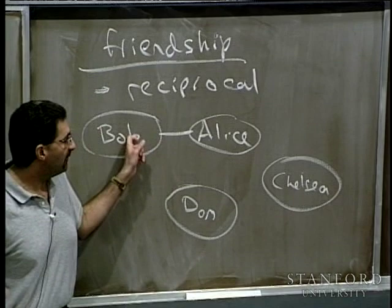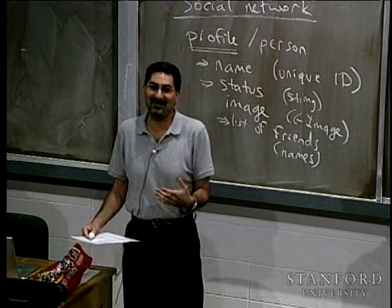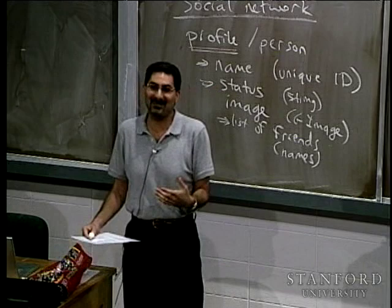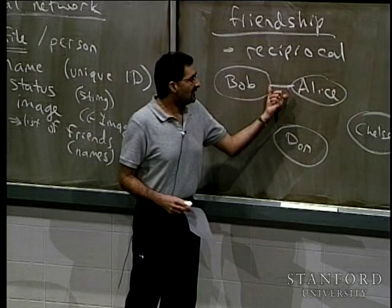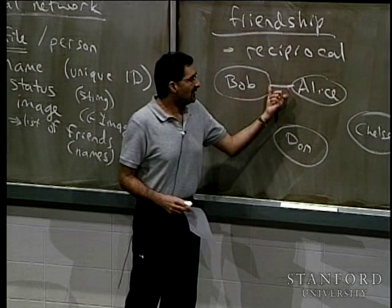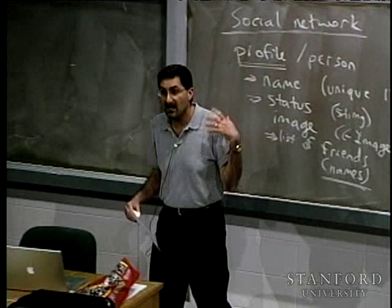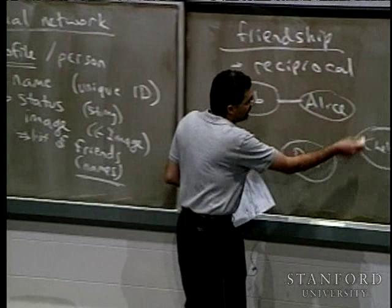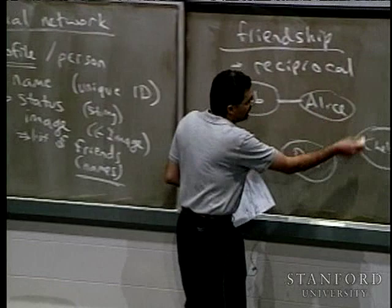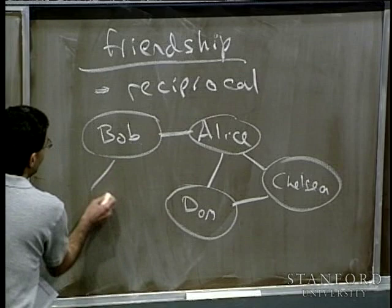If Bob ever adds Alice as a friend, that automatically means Alice becomes Bob's friend — there's never a directionality of friendship. All we need is a list of names: Bob has Alice in his list of friends, and reciprocally, Alice should have Bob in her list of friends. When we draw this out, we can say Alice is friends with Chelsea and Don, and Don and Chelsea are also friends. This is where the name 'network' comes from — eventually you have all these profiles connected, and everyone's holding hands.